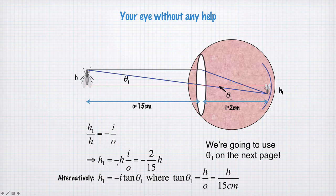So we can rearrange this to find h1 being equal to negative 2 divided by 15 times h. Or, alternatively, we can write that h1 is equal to negative i tan theta1, where tan theta1 is h divided by o, or h divided by 15 centimeters. So this is an expression for tan theta1, which is h on o or h on 15 centimeters. And we're going to use this definition of tan theta1 on the next page.